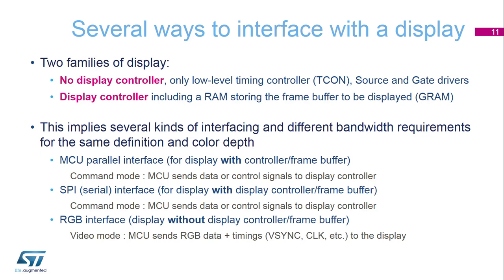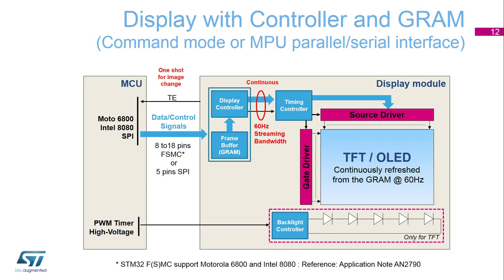This diagram illustrates a display with a controller and GRAM. The Motorola 68800 and the Intel 8080 are the parallel interfaces mentioned before. The Motorola and Intel protocols are parallel interfaces, while SPI is a serial one. In this case, only data or control signals are sent, and the display controller on the display module side is in charge of refreshing the screen with the current frame buffer. The MCU only updates the frame buffer when needed depending on the application lifecycle. Motorola and Intel protocols are generally handled using the FSMC, while SPI is handled with a dedicated peripheral. A partial update of the GRAM is also supported, allowing some optimization of the bandwidth on the display interface.